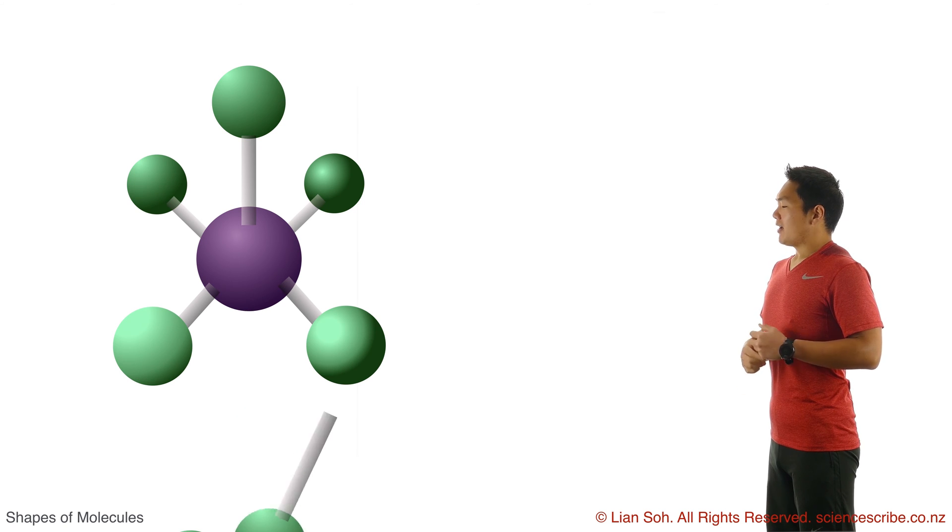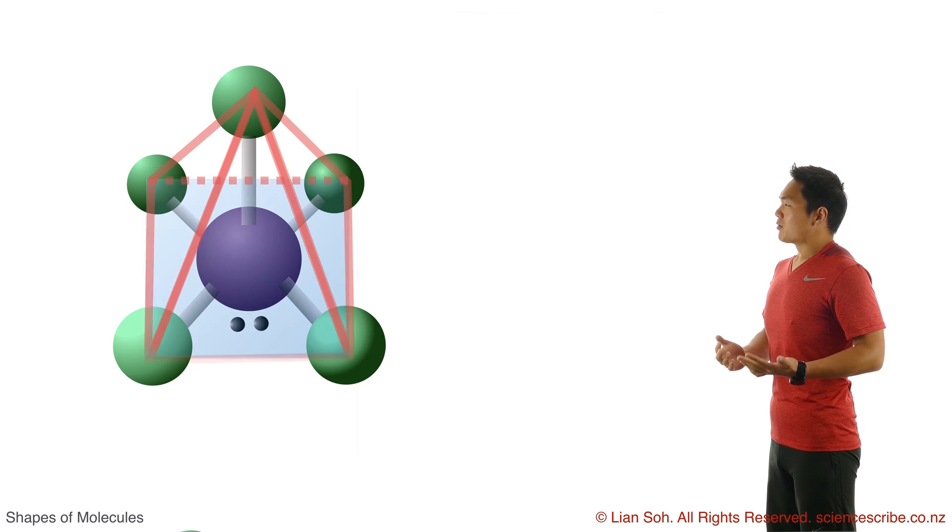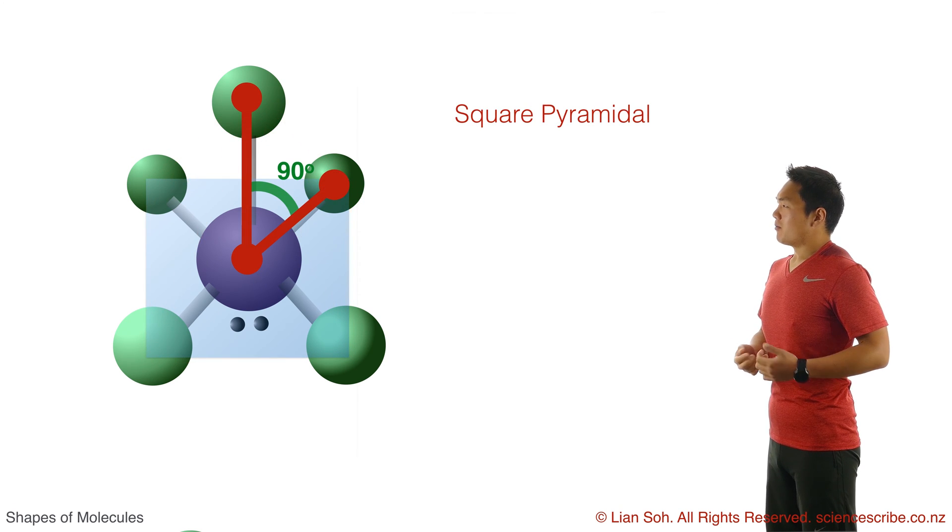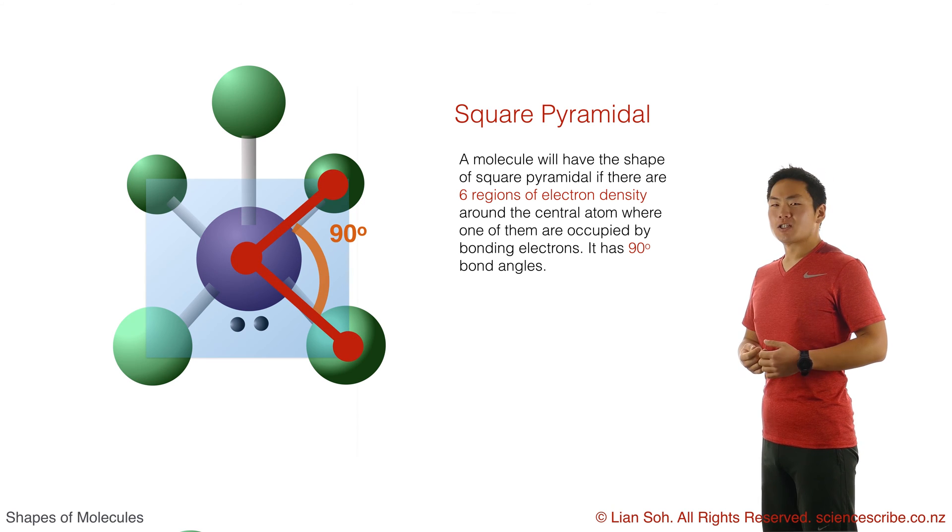I can see that in the flat plane there's still a square and then there's this bit sticking up. So it looks like a pyramid, but this time with a square base. So square pyramidal.